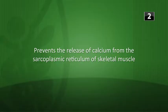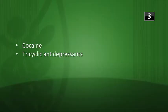Next question: what is the mechanism of action of dantrolene? Dantrolene prevents the release of calcium from the sarcoplasmic reticulum of skeletal muscle. Next question: what substances inhibit the reuptake of norepinephrine? That's going to be cocaine and the tricyclic antidepressants.